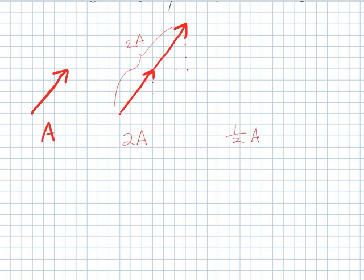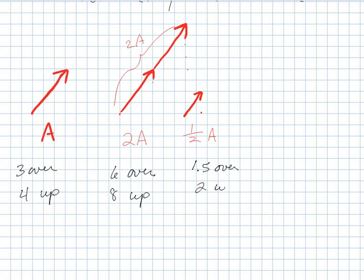So I have A. I can have 2A. I can have 1 half A. So, instead of going 3 over, I'd go 1 and a half over. Instead of going 4 up, I'd go 2 up. So I have 3 over, 4 up. And this one is 6 over, and 8 up. So, half an A would be 1.5 over, and 2 up.